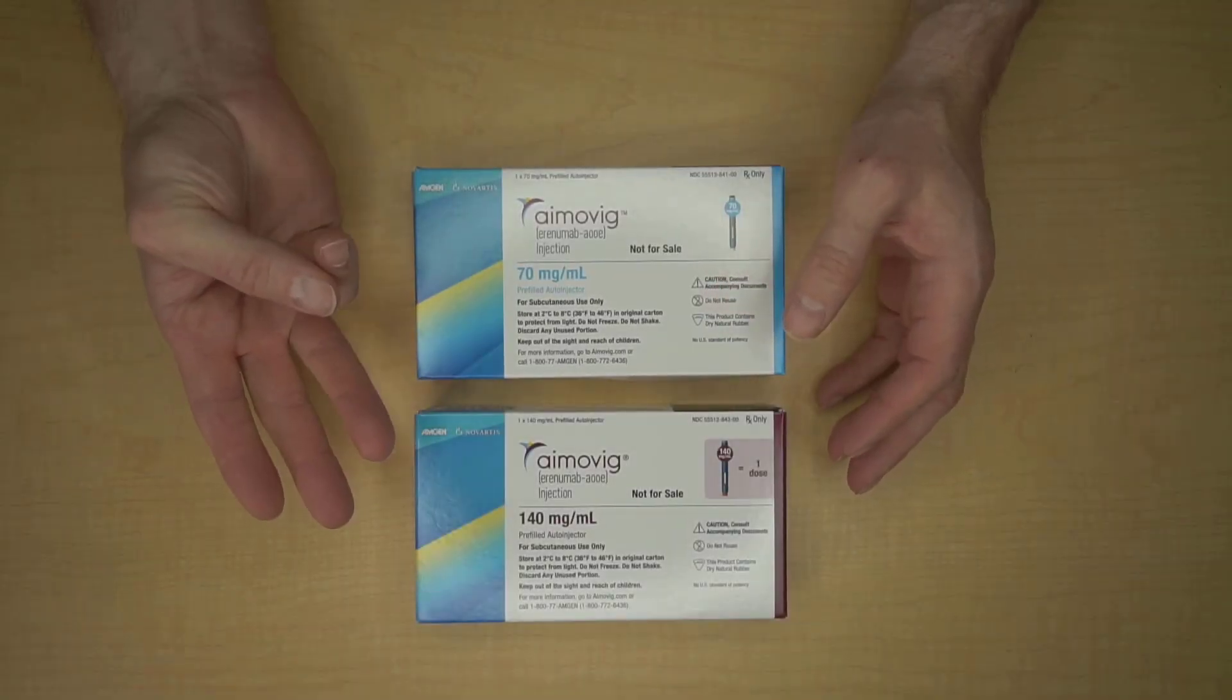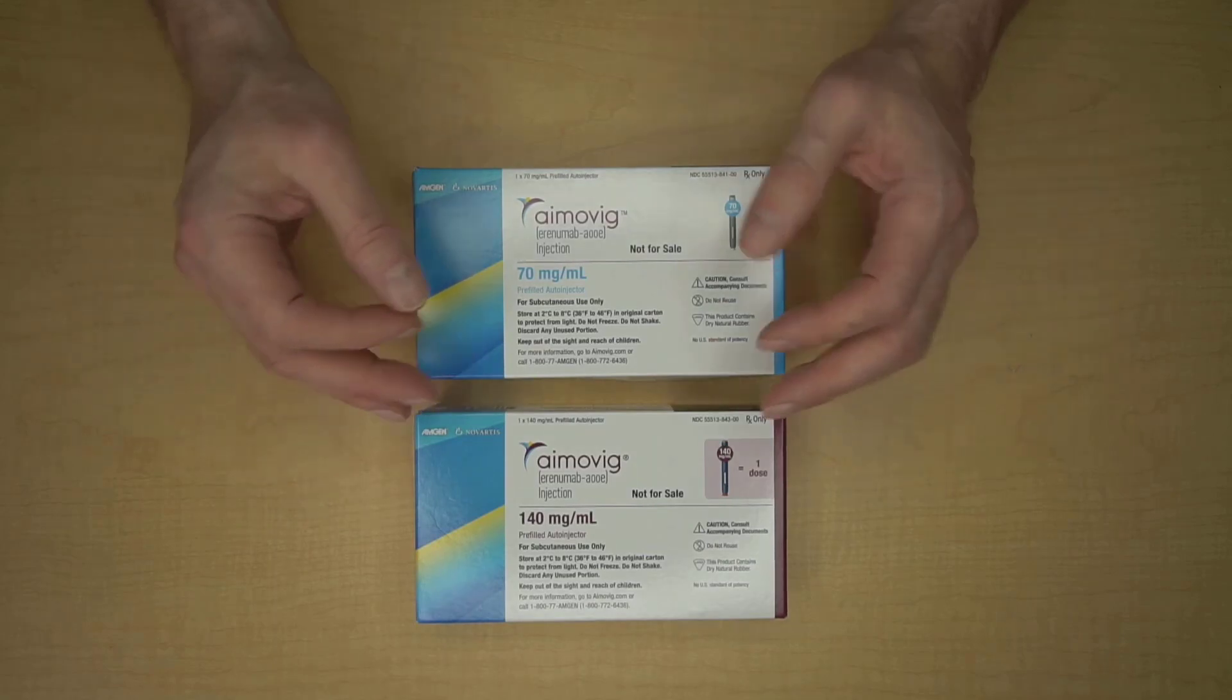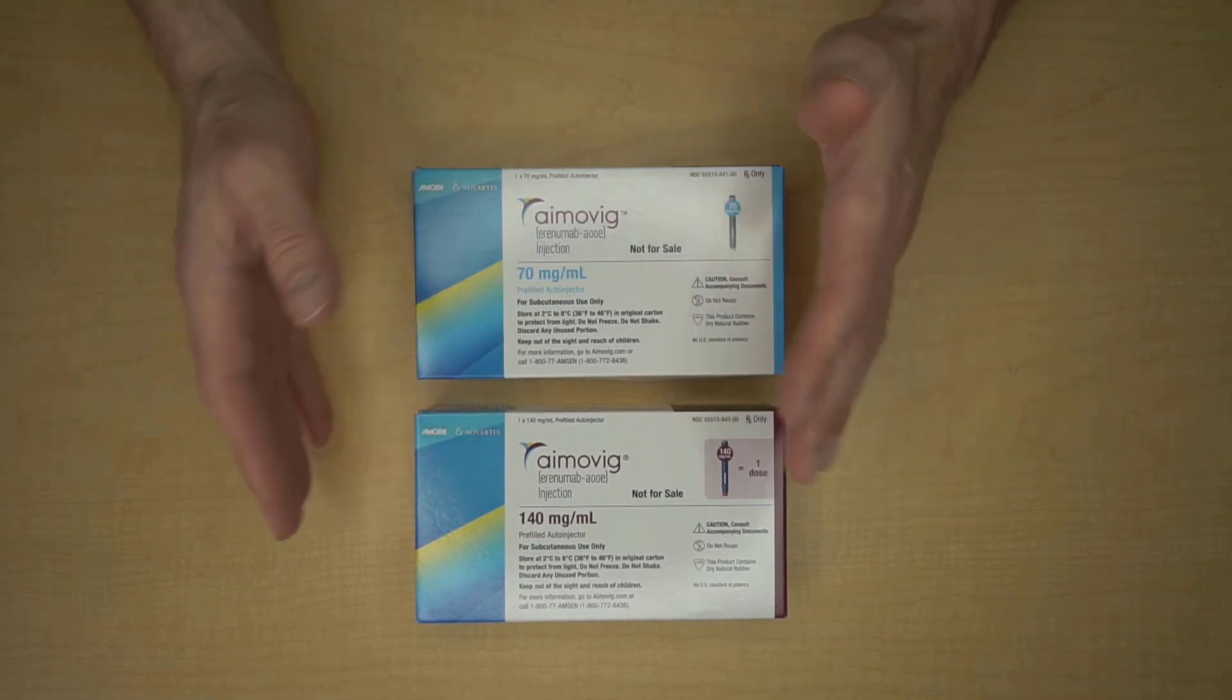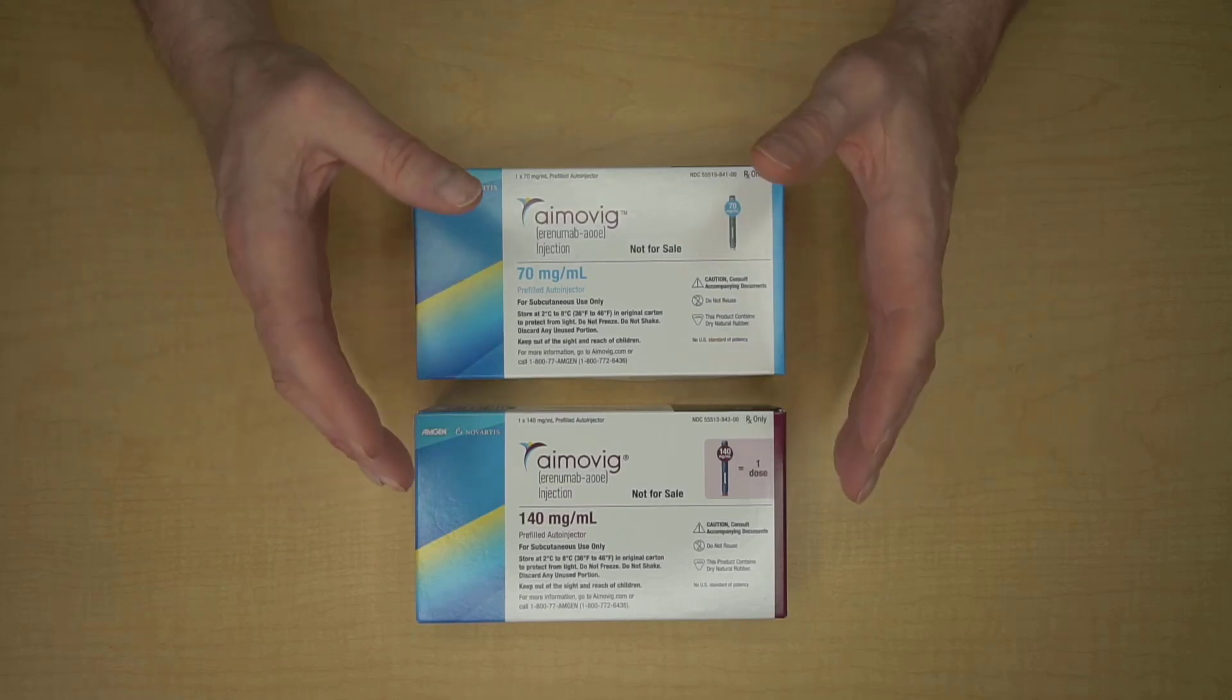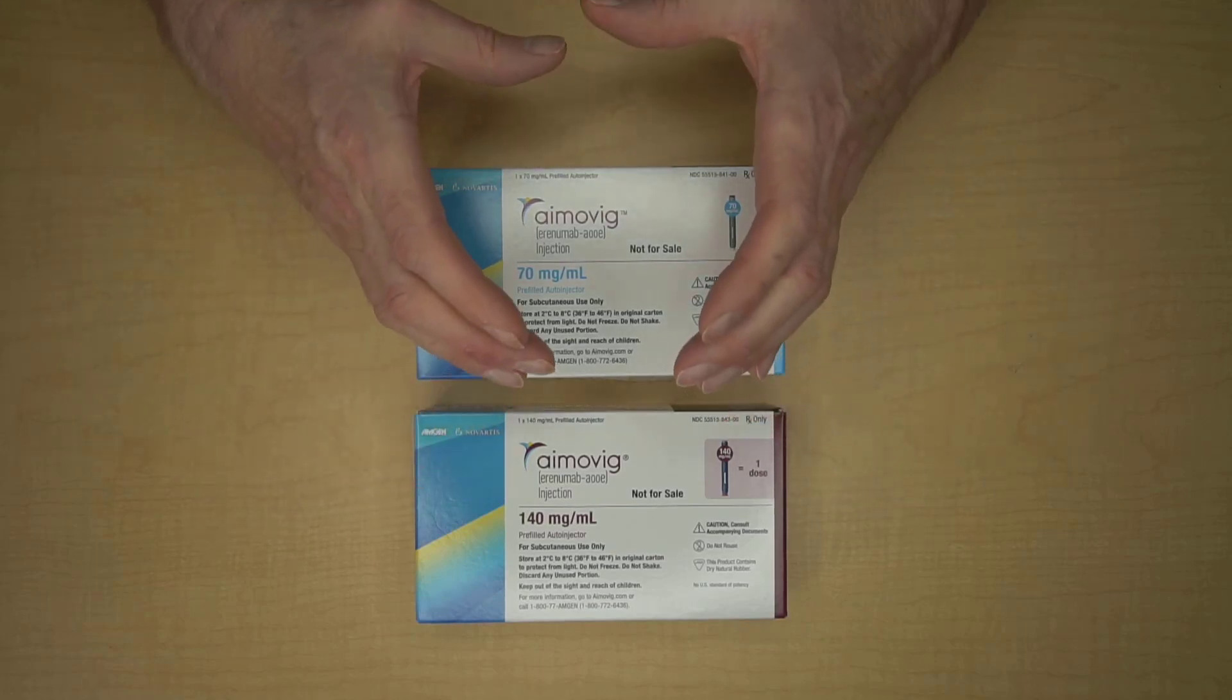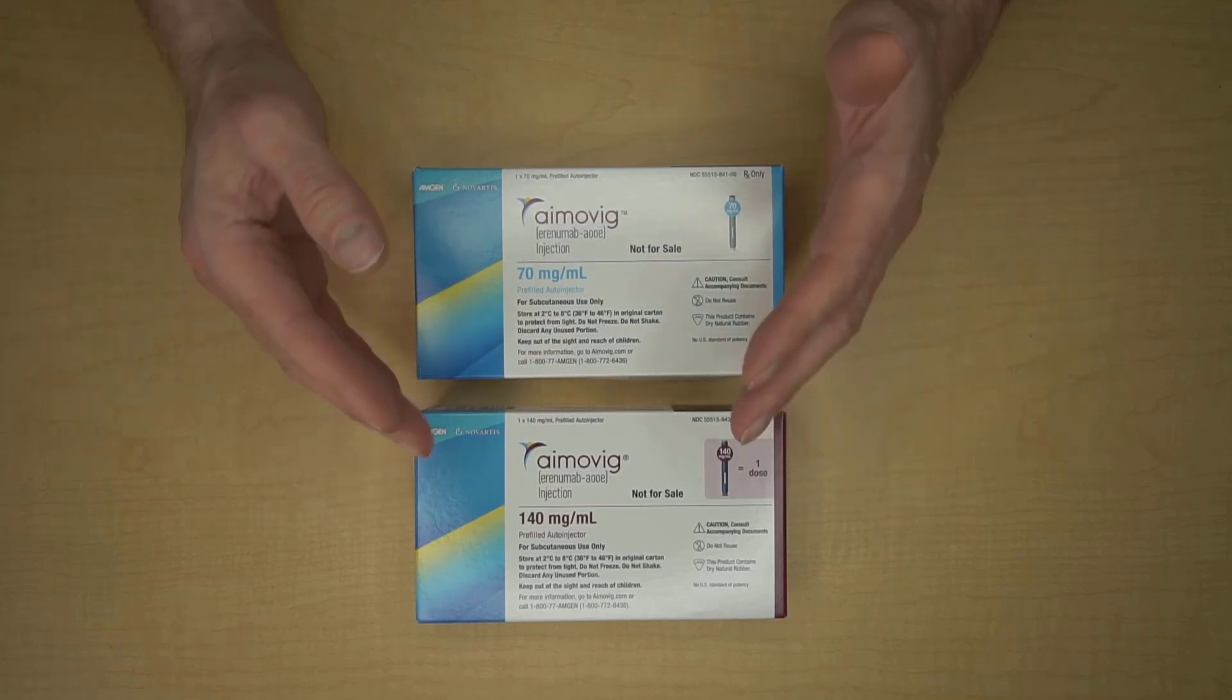There are three side effects of Amovig that are worth mentioning. The first is pretty common, and it's called an injection site reaction, which makes sense because this is an injection medicine. Injection site reactions can include things like feeling the needle, getting a drop of blood or a bruise, but often involve a patch around the site where you injected that can be red or itchy or sore, and it typically lasts a few days and goes away.